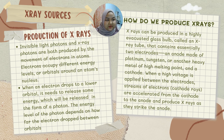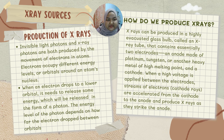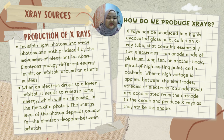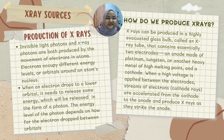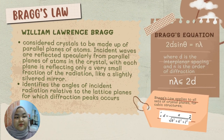X-rays can be produced in a highly evacuated glass bulb called an X-ray tube that contains essentially two electrodes: an anode made of platinum, tungsten, or another heavy metal of high melting point, and a cathode. When a high voltage is supplied between the electrodes, streams of electrons in the cathode rays are accelerated from the cathode to the anode and produce X-rays as they strike the anode.